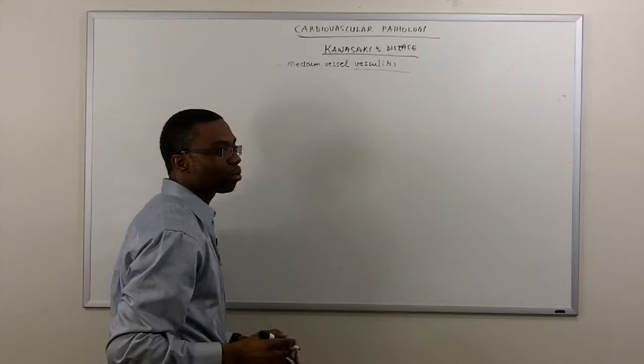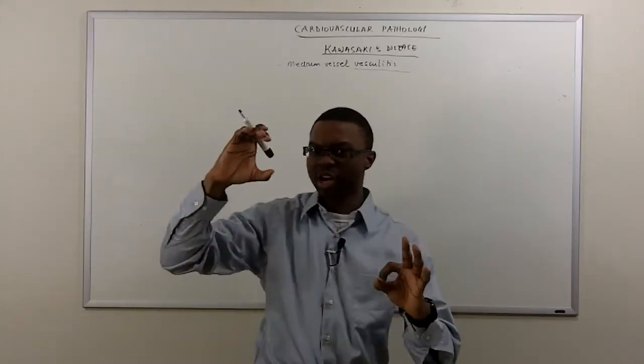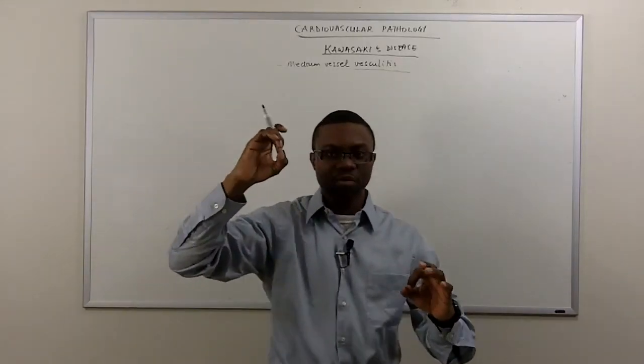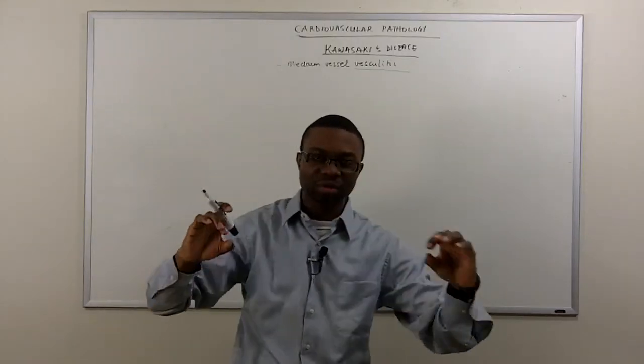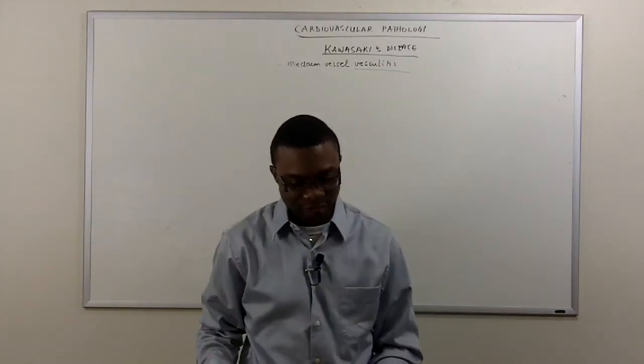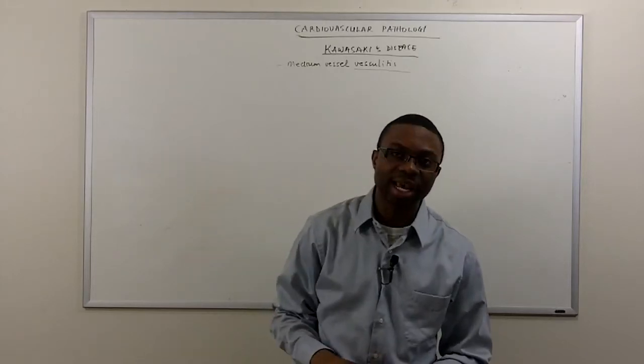Vasculitis is inflammation of a blood vessel. You got the big thick muscular arteries, and we got a smaller medium size, and then we got a tiny little small vessel. So let's talk about a case.